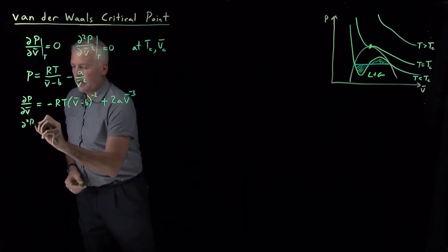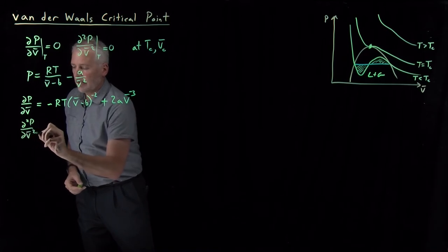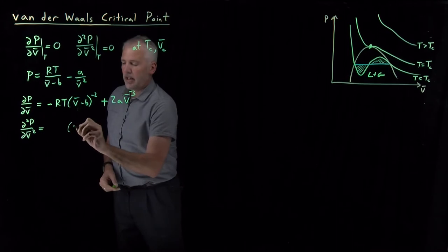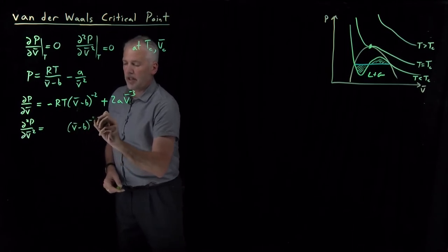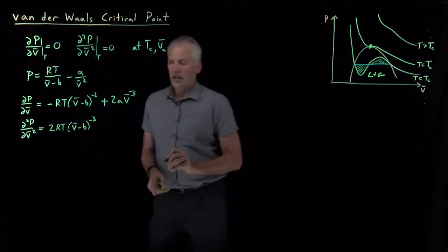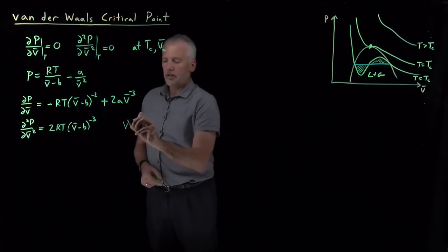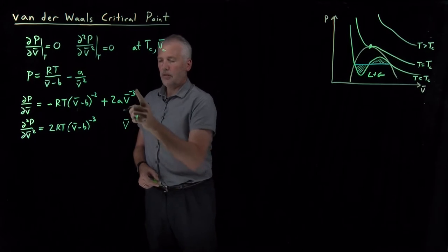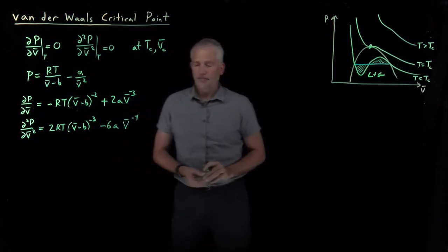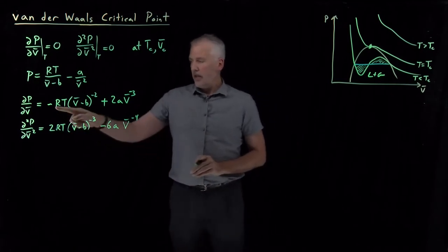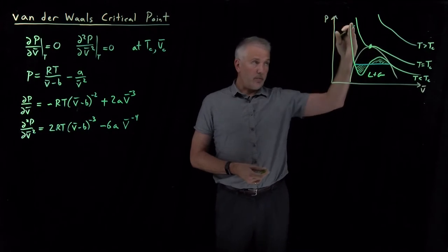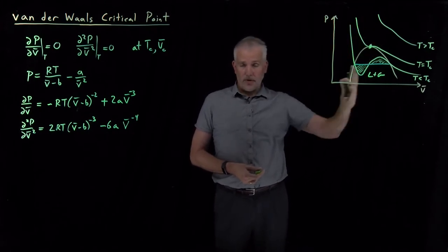Taking one more derivative for the second derivative: the (v-bar minus b)^{-2} term becomes (v-bar minus b)^{-3}, pulling down a minus 2, giving positive 2RT. The v-bar^{-3} term becomes v-bar^{-4}, pulling down a negative 3 to give negative 6a·v-bar^{-4}. These equations describe the slope and the curvature of each isotherm at any temperature and any molar volume.